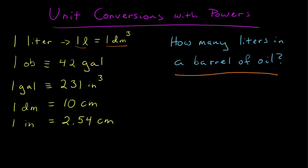How do we define a barrel of oil? A barrel of oil is also a volume, and it's defined to be 42 gallons. What's a gallon? A gallon is defined to be 231 cubic inches.